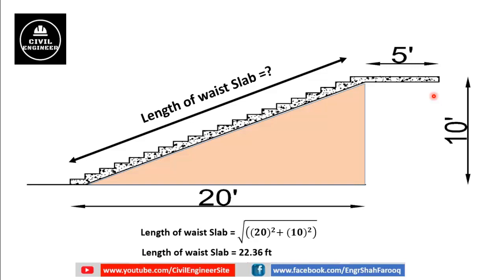To determine the total quantity of concrete required for this staircase, we will divide it into three portions: the first portion is the waist slab, the second portion is the landing of the stairs, and the third portion is the steps. We will determine the quantity of each portion separately.